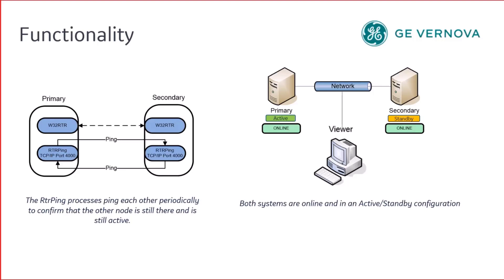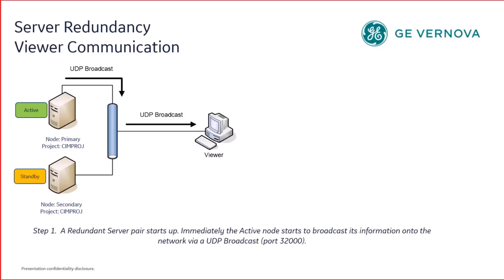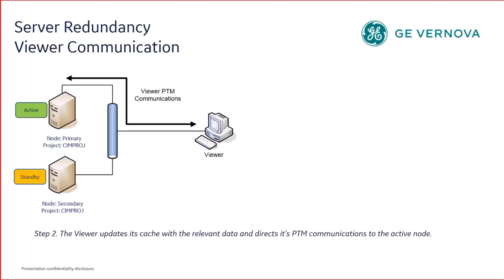This is how both systems are online and in an active-standby configuration. To understand the different steps involved: first, a redundant server pair starts up. Immediately, the active node starts to broadcast its information onto the network via a UDP broadcast. In step two, the viewer updates its cache with the relevant data and directs its communications to the active node.